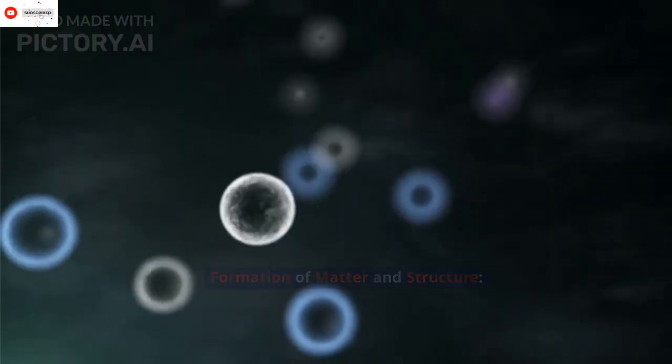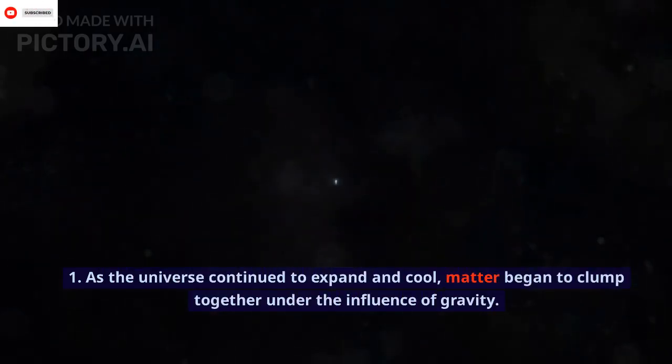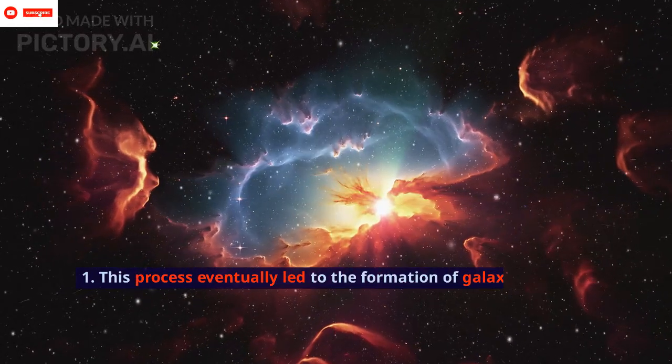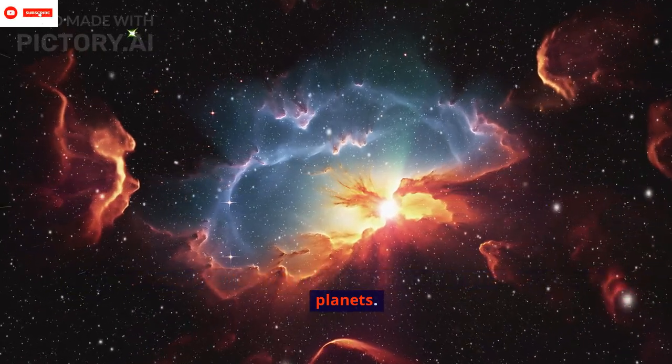Formation of Matter and Structure. As the universe continued to expand and cool, matter began to clump together under the influence of gravity. This process eventually led to the formation of galaxies, stars, and planets.